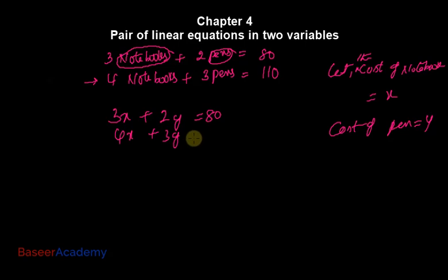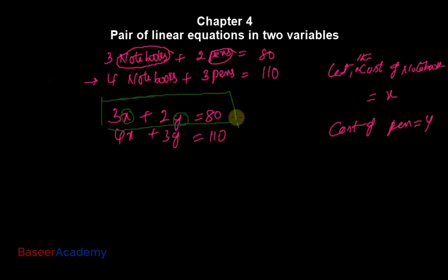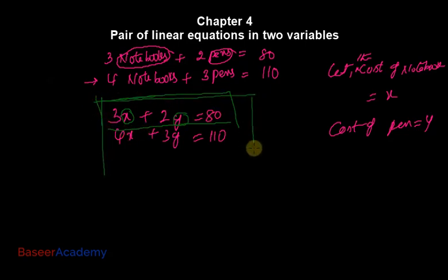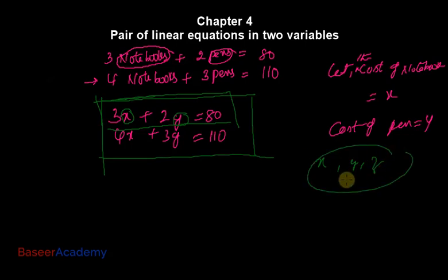If we have two unknowns and just one equation, we'll get multiple solutions — as we just saw. So if you have two unknowns, you need two equations to get a unique solution. Likewise, if you have three unknowns x, y, and z, you would need three equations. Here I have two unknowns, so I need two equations to get a unique solution.